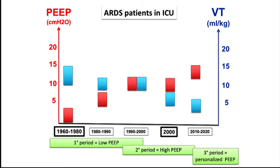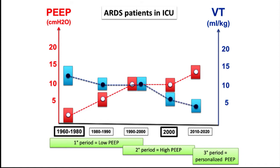I summarize this in three periods. The first period with low tidal volume and low PEEP. The second period since around the year 2000 with high PEEP. And now, since about 10 years, we try to use a personalized PEEP value. As you see here, we don't know what will happen in the next years, but probably we will work on this personalized approach — as the title of our talk — always considering tidal volume and PEEP as a couple.